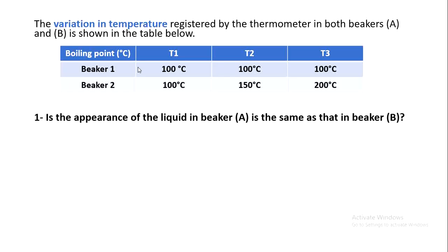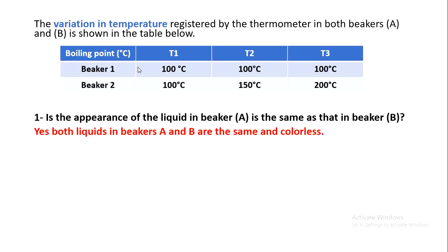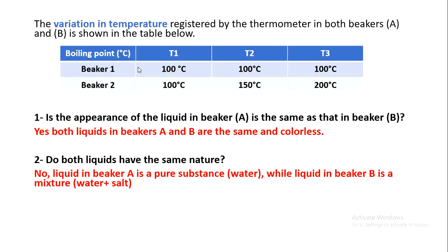We ask the first question: is the appearance of the liquid in beaker A the same as that in beaker B? Yes, both liquids in beakers A and B look the same and are colorless — I cannot tell them apart by appearance alone. But do both liquids have the same nature? No — the liquid in beaker A is a pure substance, while the liquid in beaker B is a mixture.